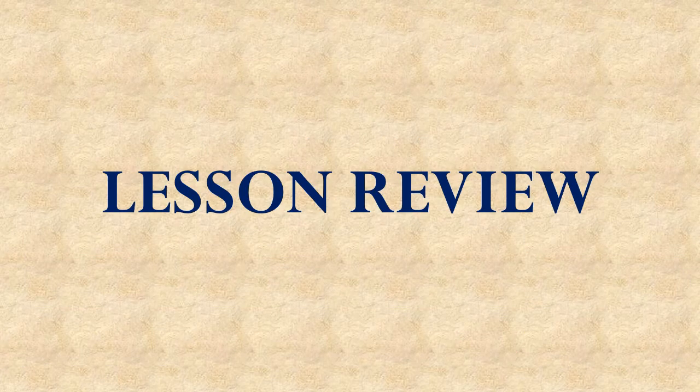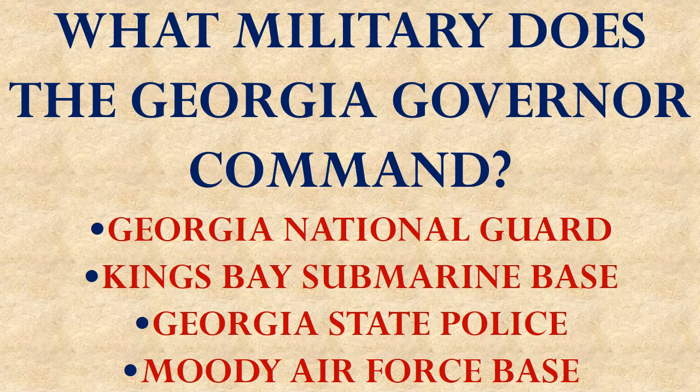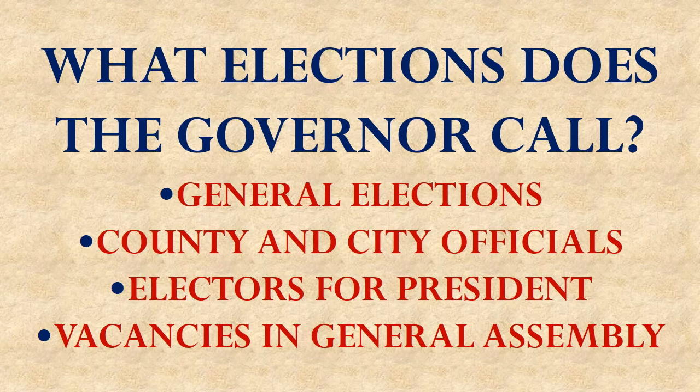Now let's review. What military does the Georgia governor command — the Georgia National Guard, Kings Bay Submarine Base, Georgia State Police, or Moody Air Force Base? The answer is the Georgia National Guard. What elections does the governor call — general elections, county and city elections, elections for presidential electors, or elections to fill vacancies in the General Assembly? The governor is authorized by the state constitution to call special elections to fill vacancies in the General Assembly.